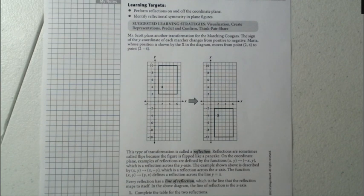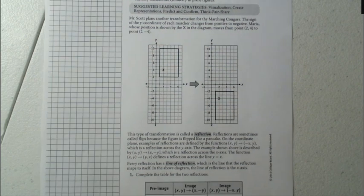Mr. Scott plans another transformation for the marching cougars. The sign of the y-coordinate of each marcher changes from positive to negative. Maria, whose position is shown by the x in the diagram, moves from (0.2, 4) to (2, -4), as you can see in the picture below.